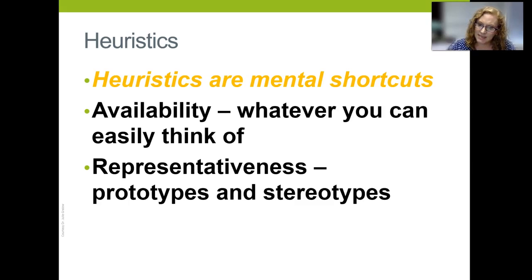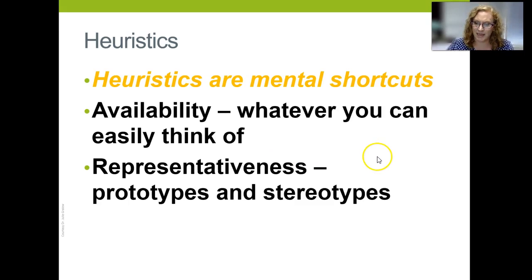The representativeness heuristic is based on prototypes and stereotypes instead of what we can easily think of. It's about whether something matches what I think of. So if you hear about somebody who is gorgeous and fit and beautiful, you might think they're probably a social media influencer. But the problem is that most people aren't social media influencers, and so we tend to ignore base rates.